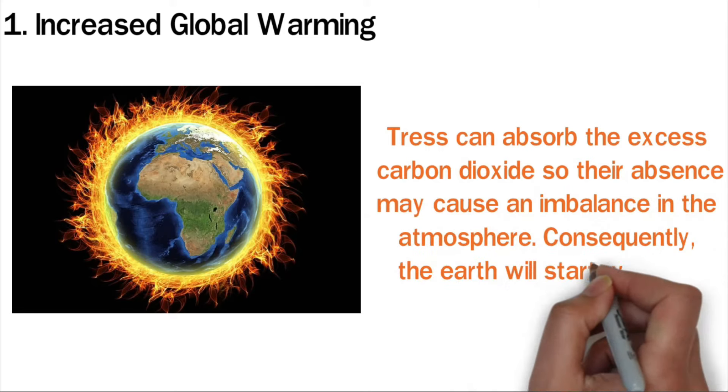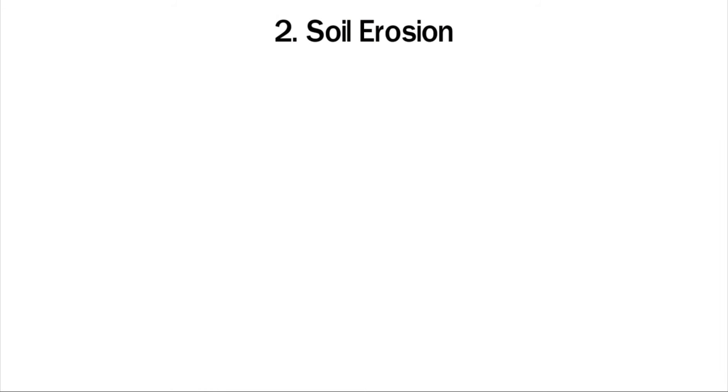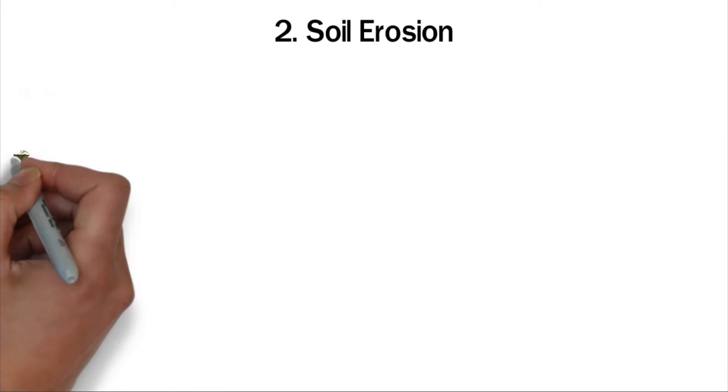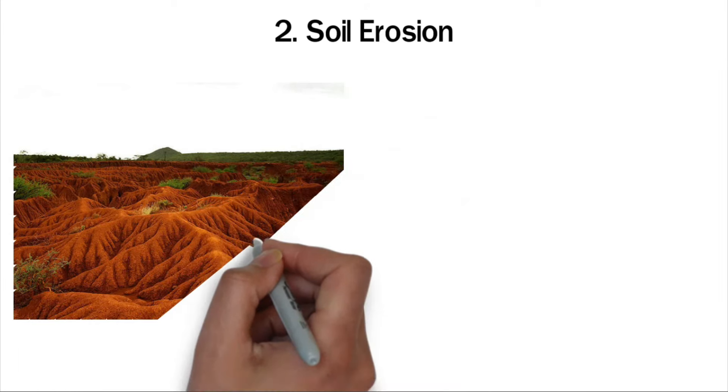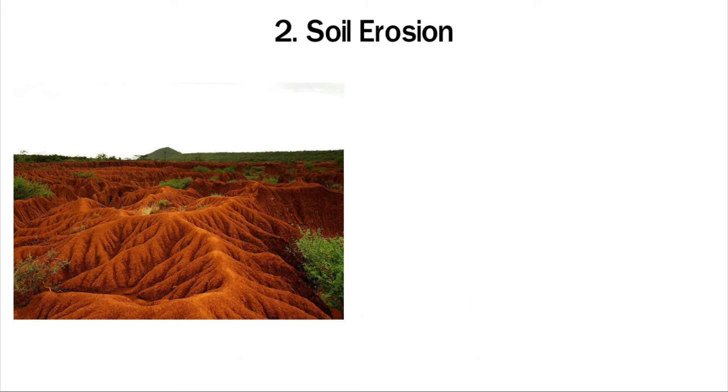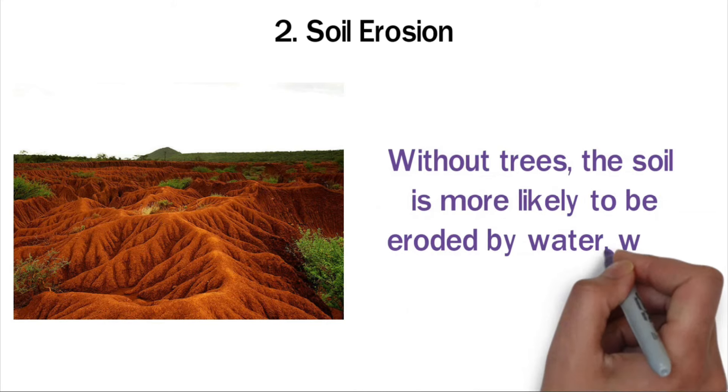Two: Soil erosion. Trees provide coverage to the soil, thereby preventing soil erosion. When trees are cut, the soil is left exposed to the agents of erosion. Soil particles are held in place by tree roots. Without trees, the soil is more likely to be eroded by water, wind, and other natural agents.